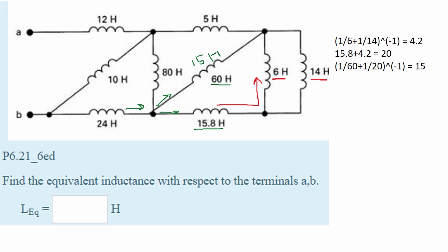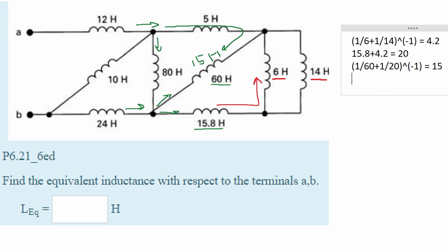Now we can see that if we run some current through this way, this 80 Henry is going to be in parallel with this 5 Henry inductor that's in series with this 15 Henry inductor. We can do this all at one time. First we're going to have our 5 Henry plus the 15 Henry because these are in series, giving us 20.